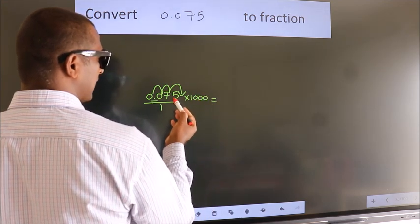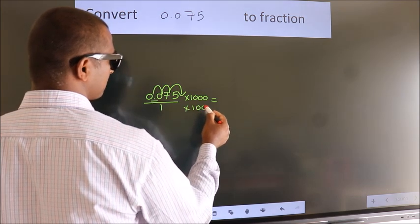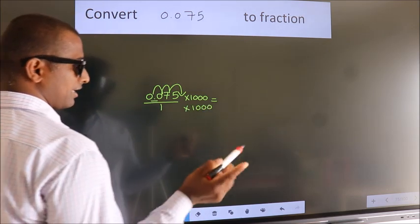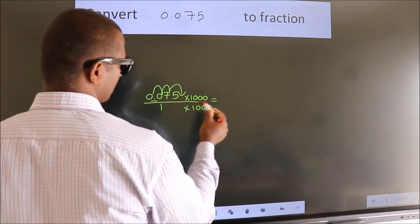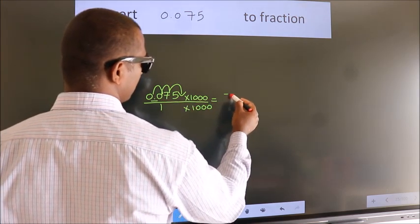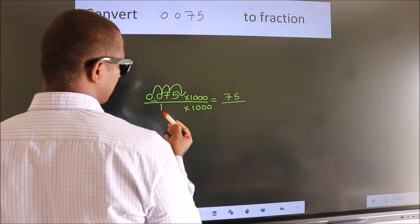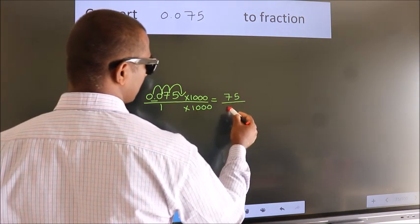Whatever we are multiplying in the numerator, in the denominator also we should do the same. Next, 0.075 into 1000, we get 75. In the denominator, 1 into 1000, 1000.